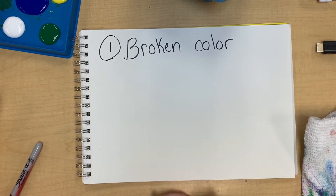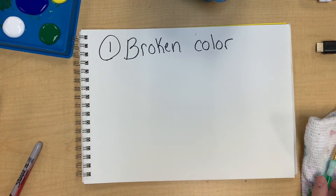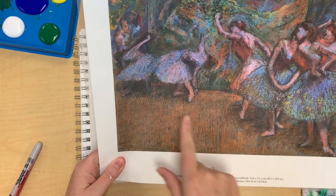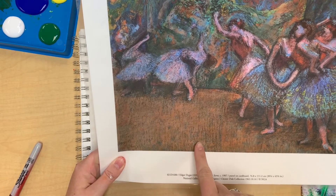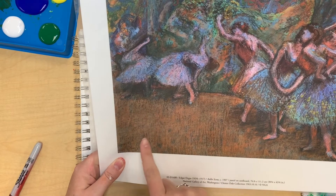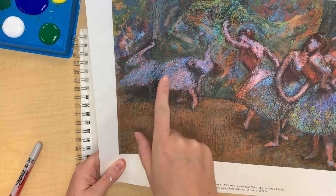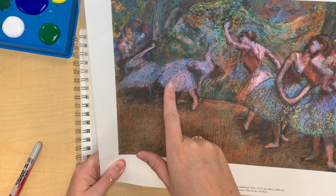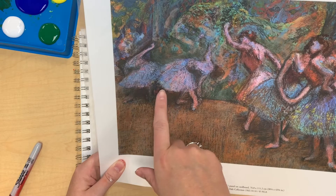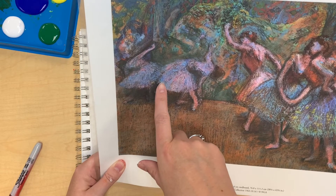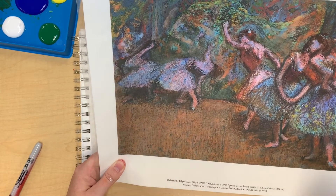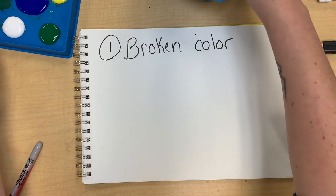Today we're going to be talking about impressionistic painting techniques. The first one is broken color, which uses local color. For example, in this piece the local color of the ground would be mostly browns, but we also see other colors. In the dresses of these dancers by Degas, we see pinks, blues, violets, and an unexpected yellow — so your local color is probably more in the pink and reds family.